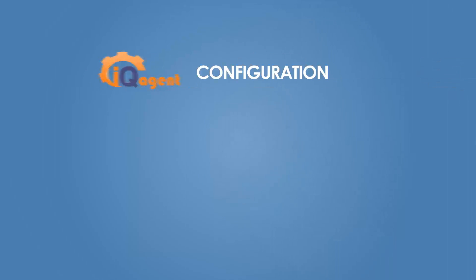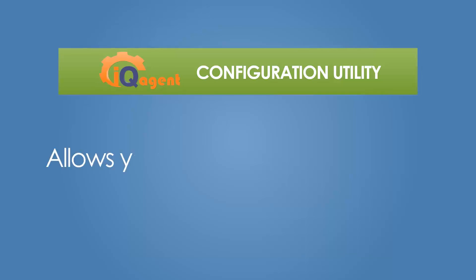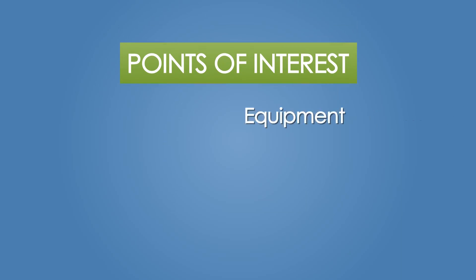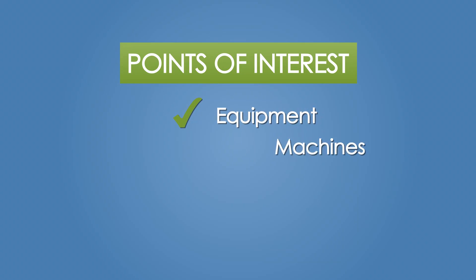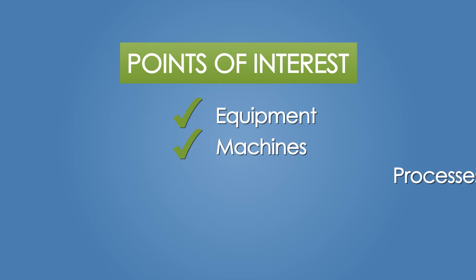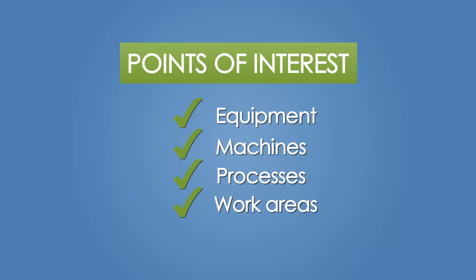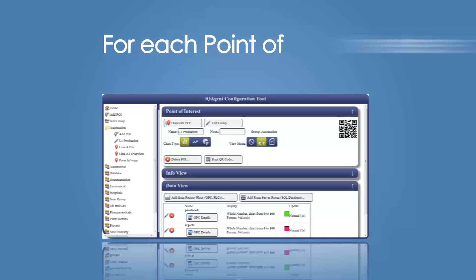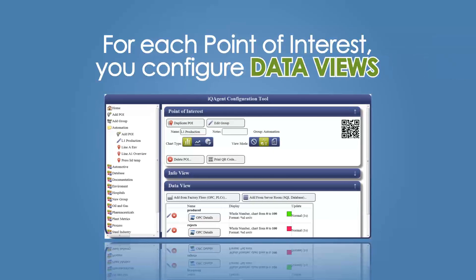The IQ Agent Configuration Utility allows you to define and configure points of interest in your plant. Points of interest can be equipment, machines, processes, work areas, or anything that can be characterized by data.